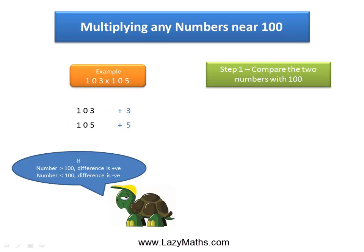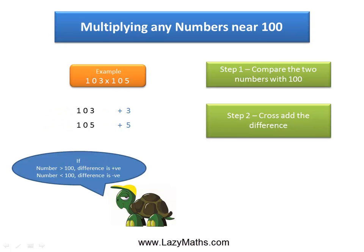The next step is to cross add these differences. We take 103 and add the +5 to get 108. Or we can take 105 and add the +3. In either way, we get 108 as our answer.